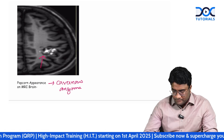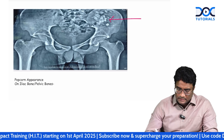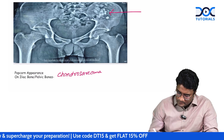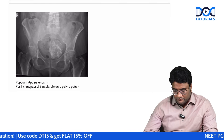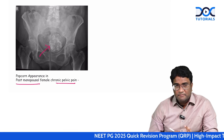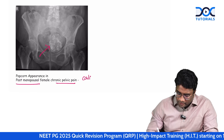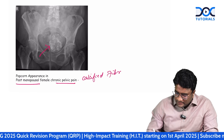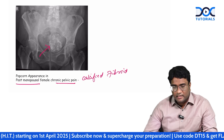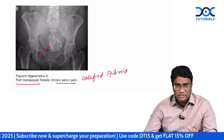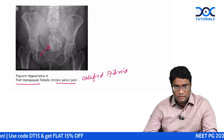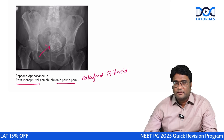A popcorn appearance on the iliac bone is chondrosarcoma. In a postmenopausal female with chronic pelvic pain showing popcorn-like calcification on pelvic radiograph in the region of the uterus, also keep calcified fibroid in your differentials. This popcorn calcification can be seen during degeneration of a fibroid.